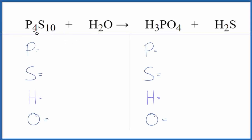To balance this equation, P4S10 plus H2O, let's count the atoms up on each side. Four phosphorus atoms, ten sulfurs, two hydrogen, and one oxygen.